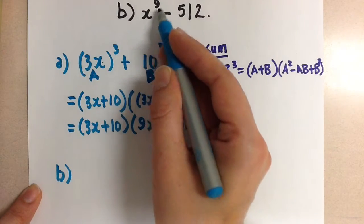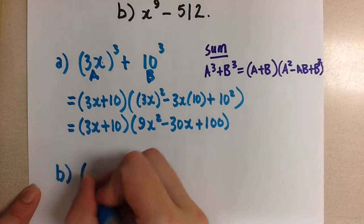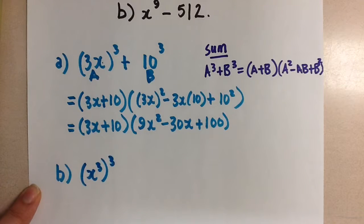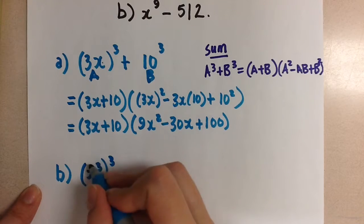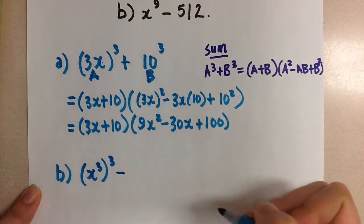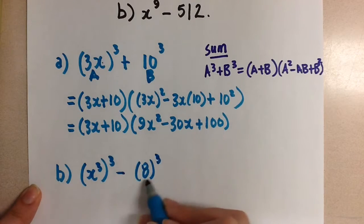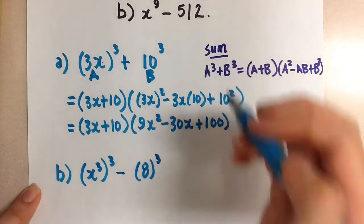So we can make use of the power of a power rule here, and rewrite this as x cubed to the power of 3. So our base is x cubed, minus 8 cubed, because 8 to the power of 3 is equal to 512.